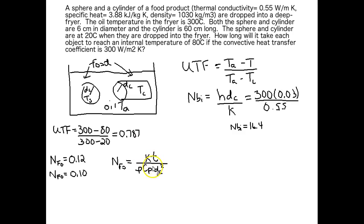The Fourier number is equal to the thermal conductivity times the time that has gone by since we put the food in the oil bath, divided by the density of the food, the specific heat of the food, and the critical dimension of our objects squared.